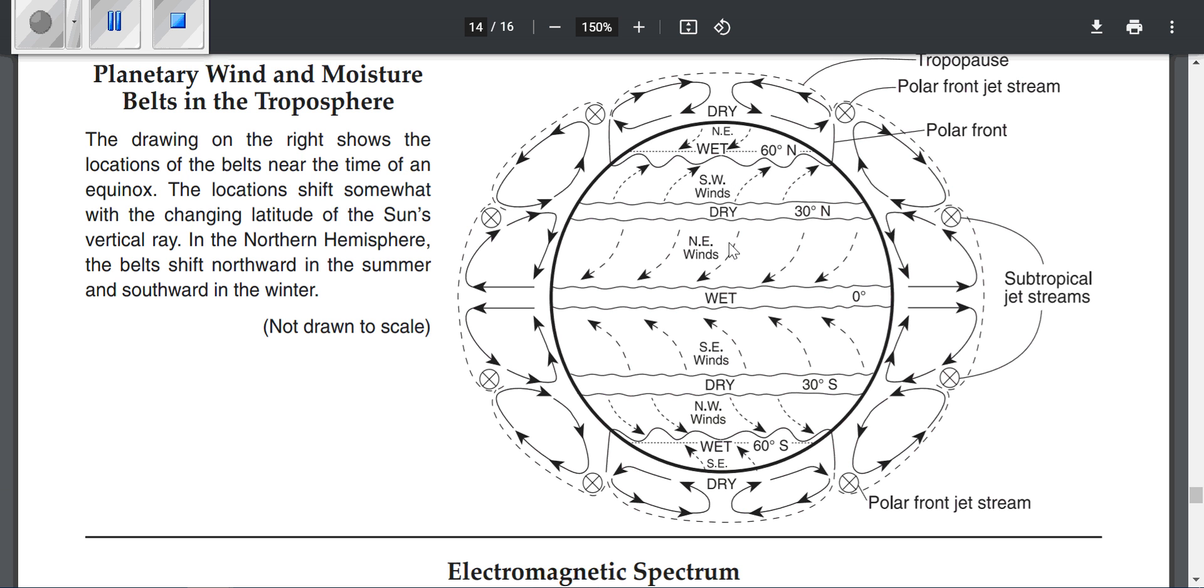And there are different wind patterns on the surface of the Earth. You just look at these arrows right here to see which way the wind is usually coming from.